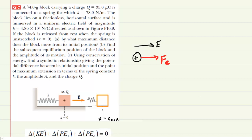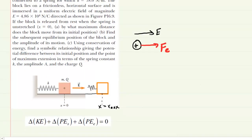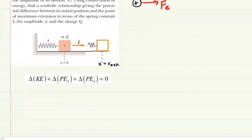That maximum distance is what we're looking for in Part A, and it turns out we can use conservation of energy to determine x_max. We've written the conservation of energy below: the change in kinetic energy plus the change in elastic potential energy from the spring, plus the change in electrical potential energy, all equals zero according to conservation of energy. Let's examine each one of these energy changes separately.